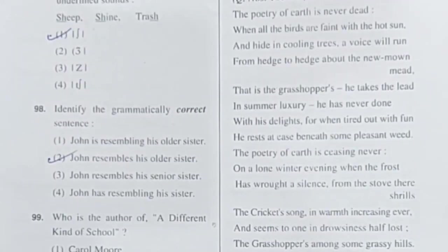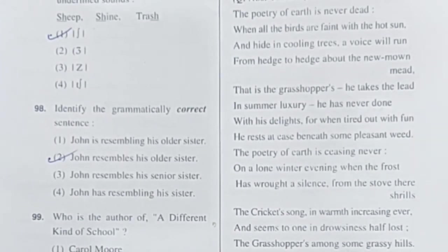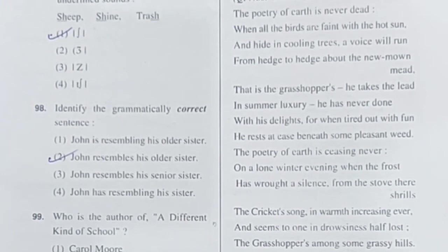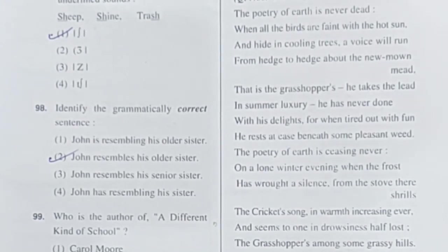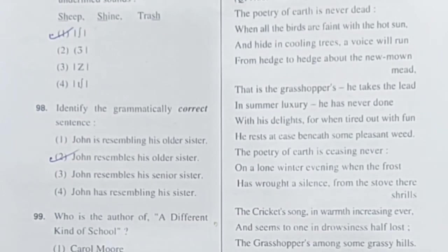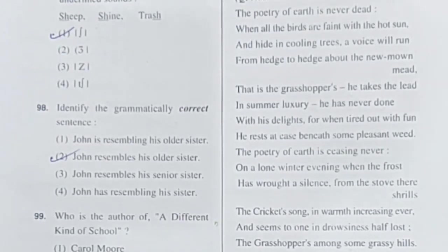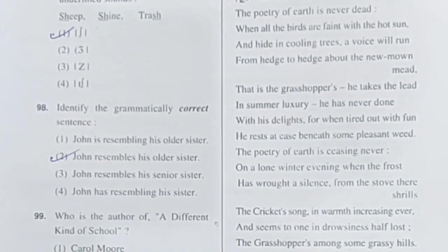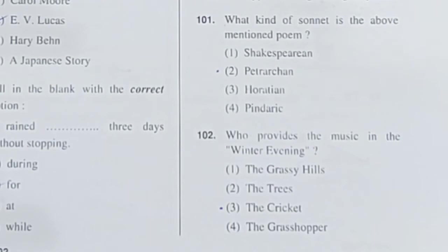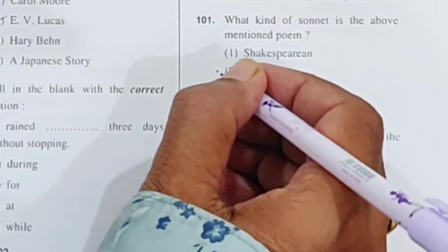Direction: Read the following poem and answer the questions given below — question numbers 101 to 106. You read the poem on your own. Question 101: What kind of sonnet is the above-mentioned poem? The answer is Petrarchan sonnet. Option 2 is correct.